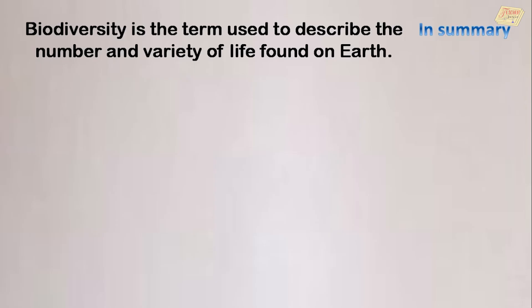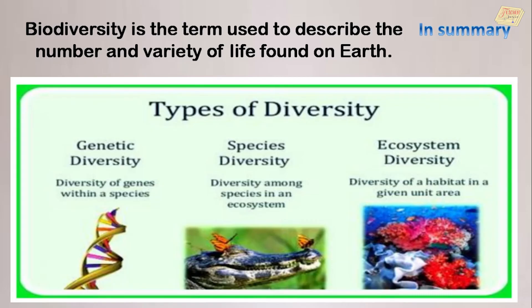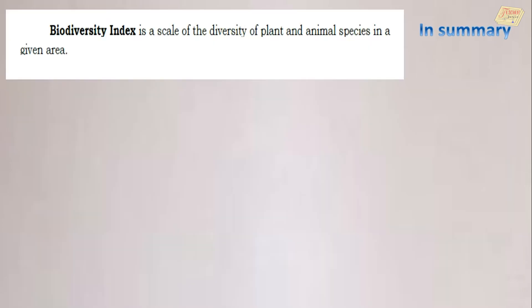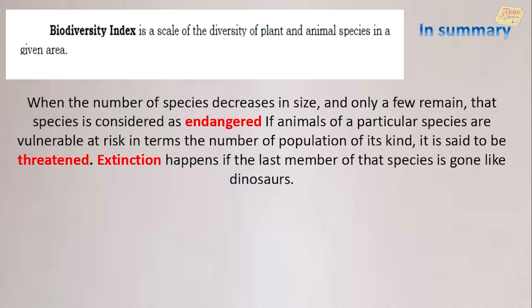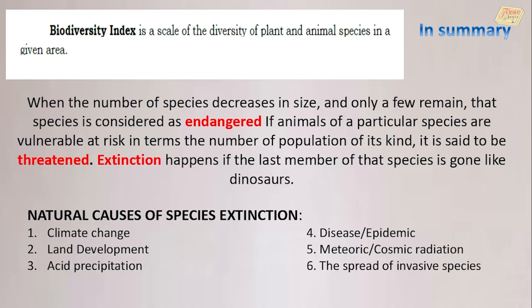In summary, biodiversity is the term used to describe the number and variety of life found on Earth. The types of biodiversity are genetic diversity, species diversity, and ecosystem diversity. Biodiversity Index is a scale of the diversity of plant and animal species in a given area. When the number of species decreases and only a few remain, that species is considered endangered. If animals of a particular species are vulnerable at risk in terms of population, it is said to be threatened. Extinction happens if the last member of that species is gone, like dinosaurs. The natural causes of species extinction are climate change, land development, acid precipitation, disease or epidemic, meteoric or cosmic radiation, and the spread of invasive species.